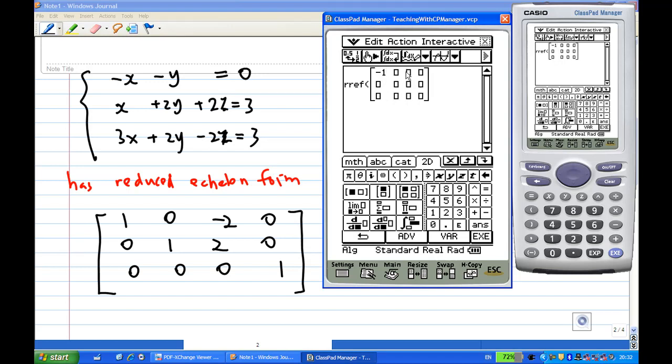The entries are: -1, -1, 0, 0, then 1, 2, 2, 3, then 3, 2, -2, 3. Then I close the bracket and press enter, and it gives me the row-reduced form.